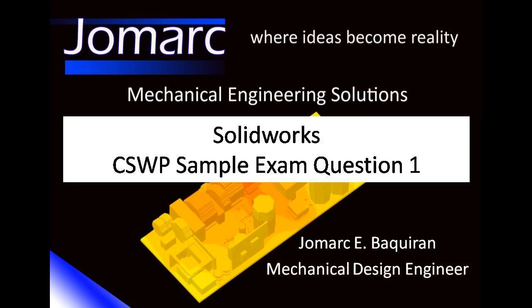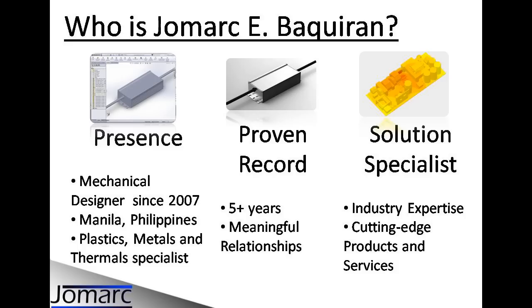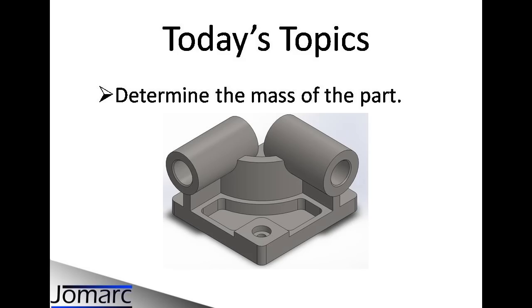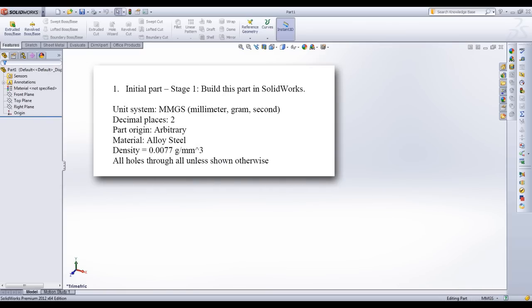Hi everyone, today we will answer the first of five questions in the SOLIDWORKS CSWP exam. Today's topic: we will build this part and determine its mass. So let's get started. At the third page of the CSWP sample exam, it says unit system. This can be accessed at the bottom right, so we're going to select millimeter, gram and second. For the material and density, we will assign those values after building the part.